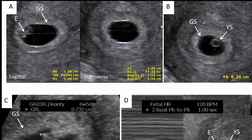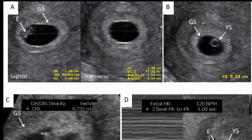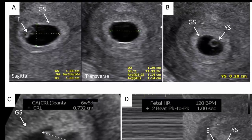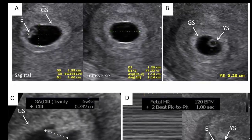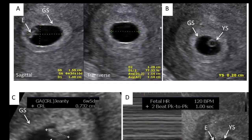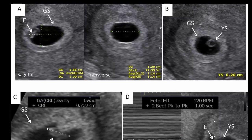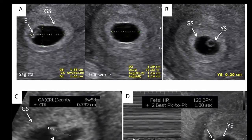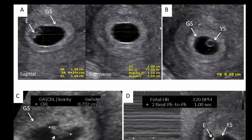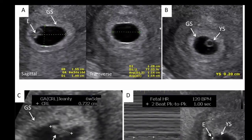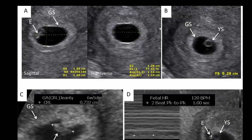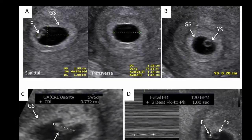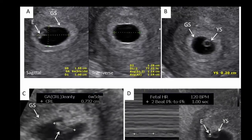Its diameter is about 2 mm and increases in size to measure 5–6 mm at 5 weeks. The mean gestational sac diameter then increases by approximately 1 mm per day throughout the first trimester.